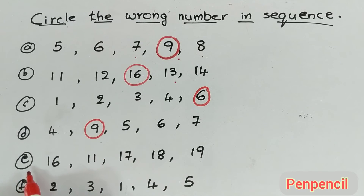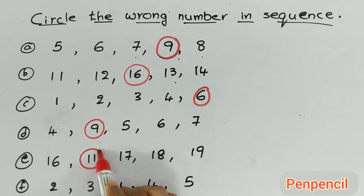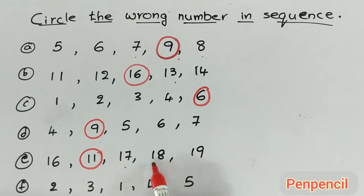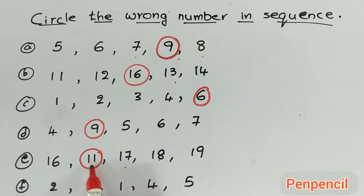Come on, next one. 16 — after 16? 11? No. What is the number after 16? 17. Number after 17? 18. What is the number after 18? 19. Correct. So 11 is the wrong number in this series.